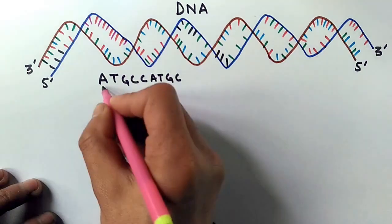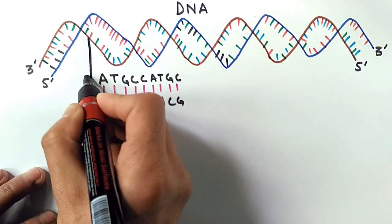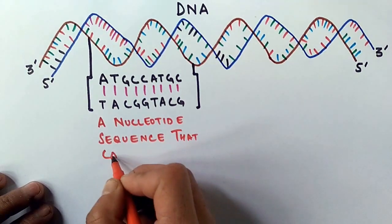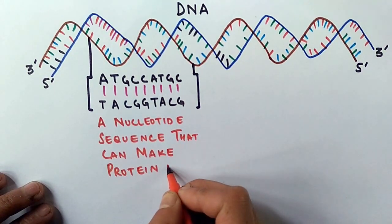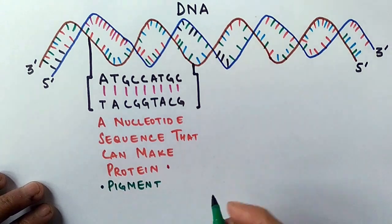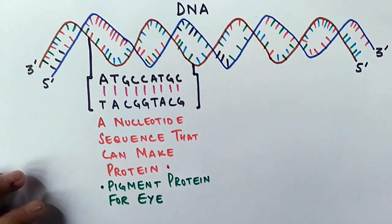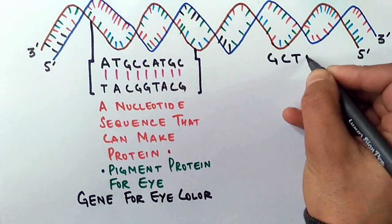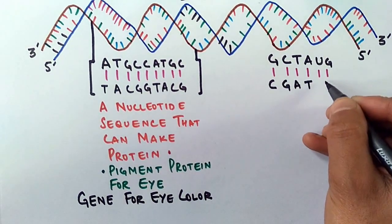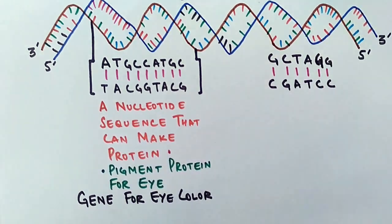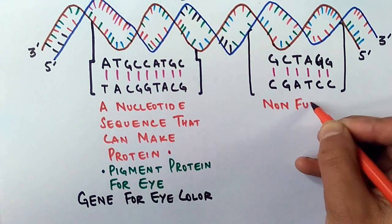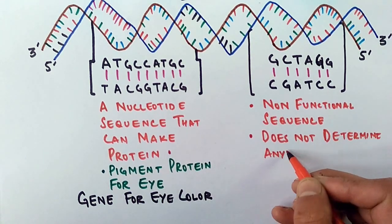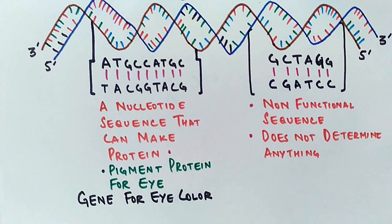Let's see this: if we see a sequence A T G C A T G C and its complement strand, we see it's a nucleotide sequence that can make a protein. Suppose it makes a protein for an eye color, a pigment protein for eye, that means we say it's a gene for an eye color. And in the same way, on the other hand, we see a sequence G C T A G G and its complement strand, it does not contain any function, it does not contain any coding sequence, it's a non-functional sequence, it does not determine anything and cannot code for a protein.